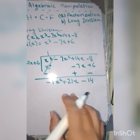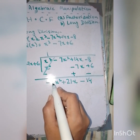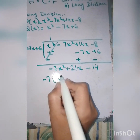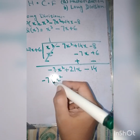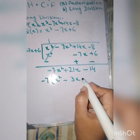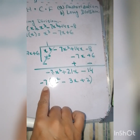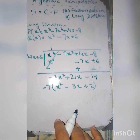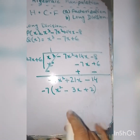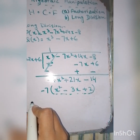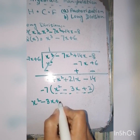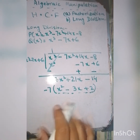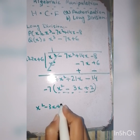We can factor out -7 from the remainder: -7(x² - 3x + 2). We ignore the -7 scalar factor since it is not common to both polynomials. So we now use x² - 3x + 2 as our new divisor. Bringing q(x) = x³ - 7x + 6 inside as the new dividend.